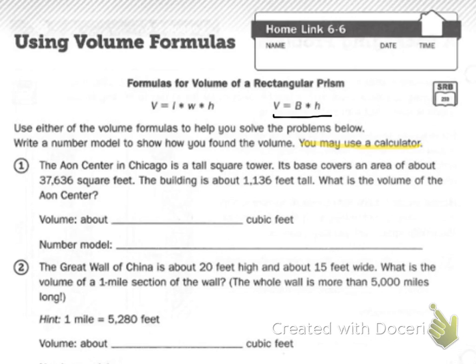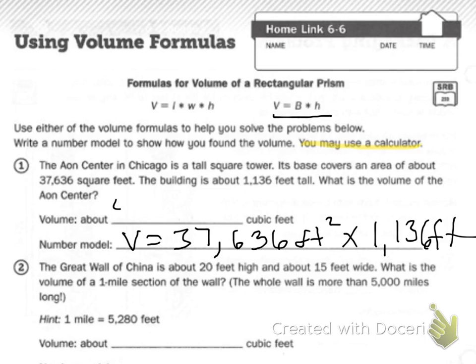What is the volume of the center? So I'm going to say volume equals 37,636 feet squared times 1,136 feet. I put those two numbers in the calculator, and I got the volume is about 42,754,496 cubic feet.